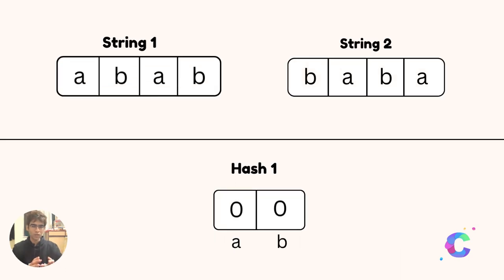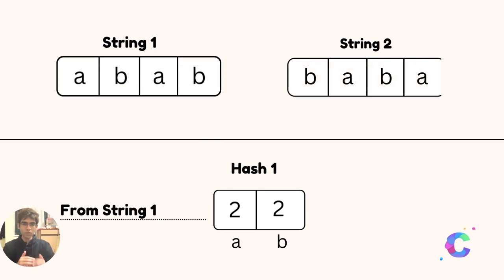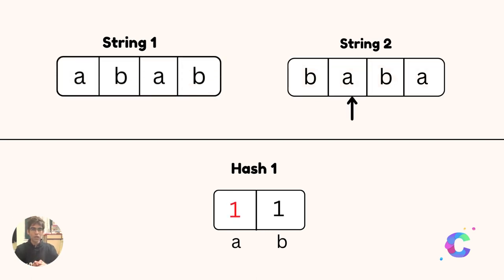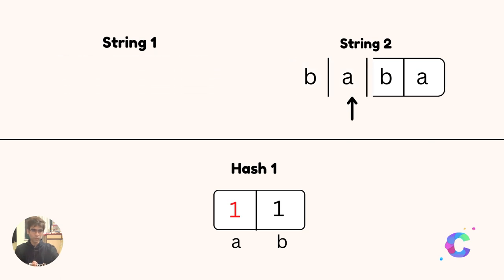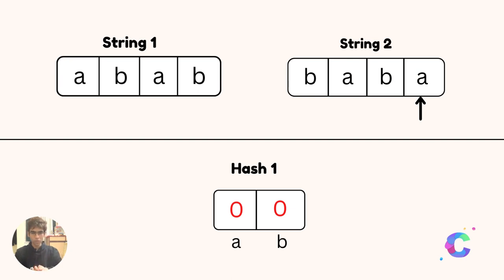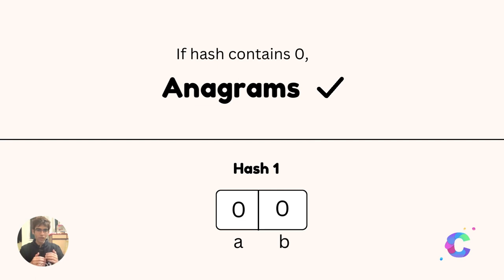Here, what we will do is maintain only one hash table for both the strings. From string1 we count the number of characters — A's count is 2 and B's count is 2. Now from string2 we take the first element B, and as B is present in the hash table, we decrement the count from 2 to 1. The second element is A, so we decrement the count of A from 2 to 1. The third element is B, so we decrement from 1 to 0. The last element is A, so we decrement the count of A from 1 to 0. The final hash table entries are 0 and 0, and if the hash table at the end contains all zeros, we can say that the strings are anagrams.